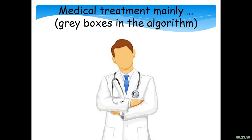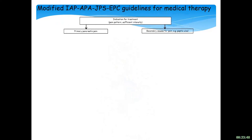The medical therapy is shown in the gray boxes in the algorithm. Starting from scratch: first of all, you have to consider whether there is an indication for treatment — is the pain severity sufficient? Is there an impact on quality of life? Otherwise, don't treat the pain, because all treatments have side effects. If you consider treatment important, the most important thing is to consider the secondary causes for pain, not the primary causes.